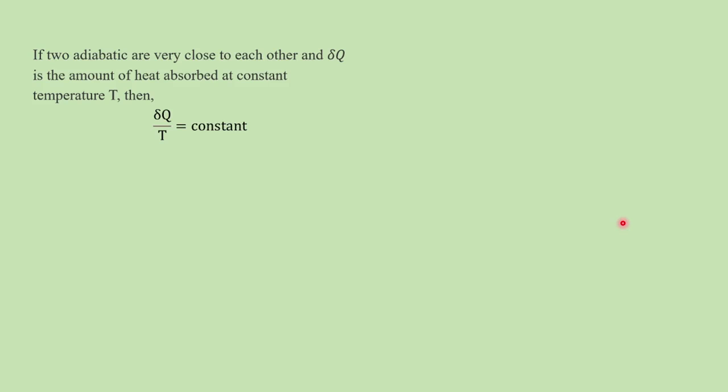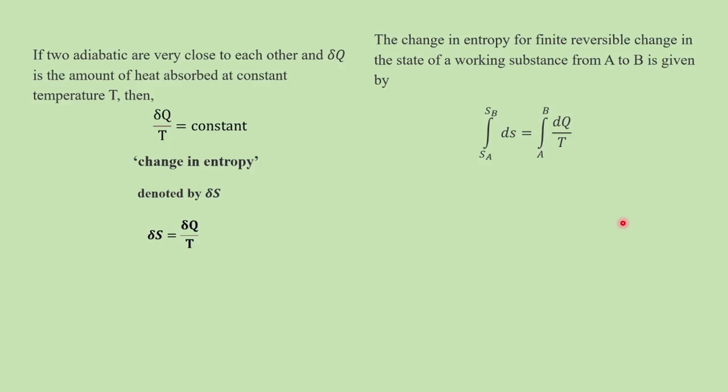This ratio is called the change in entropy between the states represented by two adiabatics. It is generally denoted by dS, so we can write dS equals dQ by T. The change in entropy for a finite reversible change from state A to state B is written as the integral from SA to SB of dS, which equals the integral from A to B of dQ by T, and the left-hand side gives SB minus SA.